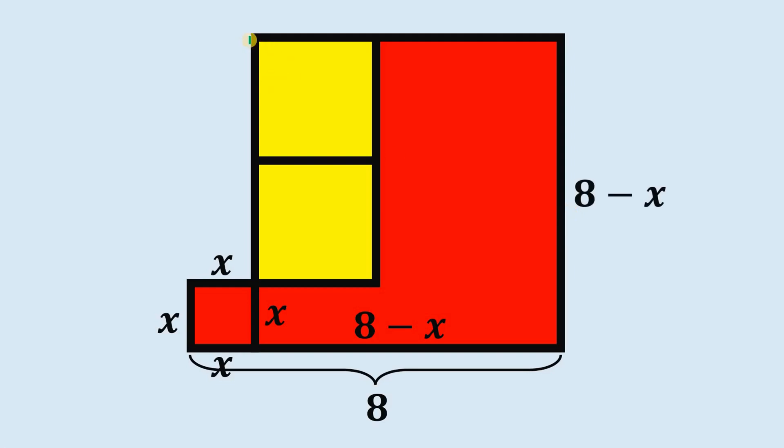Now this part is just 8 minus x minus x, or simply 8 minus 2x. Now since these two sides are equal because these two yellow squares are congruent.